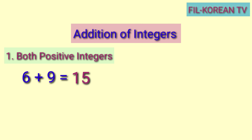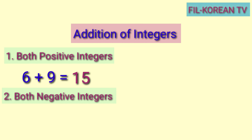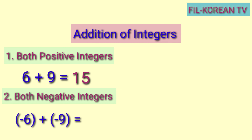Next, let's add both negative integers. Let's add negative 6 plus negative 9. To add integers with the same negative signs, we just add the numbers, then we copy the negative sign in the answer. So, negative 6 plus negative 9 equals negative 15.